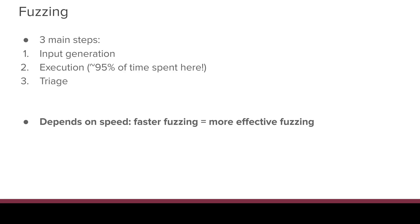Fuzzing works in three main steps. First is input generation: we're fuzzing some program that parses an input — for example, an archive utility like tar or 7-zip. The input is the file with the compressed archive, the program takes that file, processes it, and produces output like extracted files. It could also be a website, where the program takes network packets as input and conditionally responds. At a high level, we generate the input we're going to give the program.